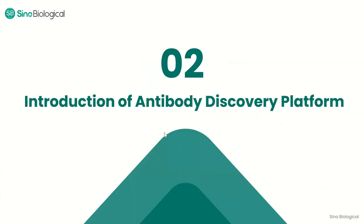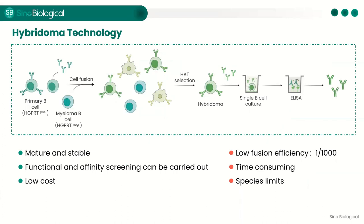With the background of how antibodies are produced, let's look at how antibodies are deliberately developed on various platforms. Hybridoma technology has been around for almost 50 years since its invention in 1975, and it is still the most commonly used technique for antibody production.